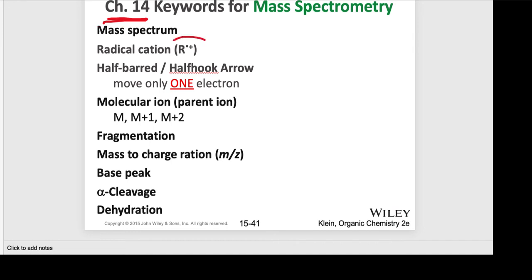It becomes very important for us to understand the role of what's called a radical cation. In a mass spectrometer, a molecule is being bombarded with high-energy electrons, so one electron goes in and then knocks out another electron. That's why we now have an unpaired electron, so that gives you the radical nature, and because an electron is missing — and every electron carries a charge — we are now dealing with a cation.